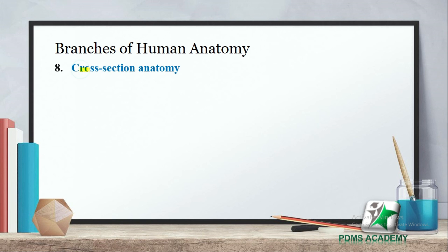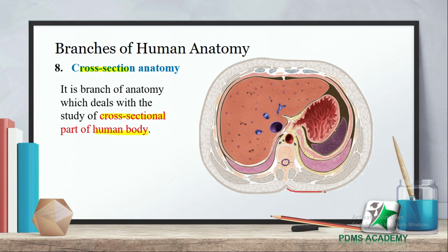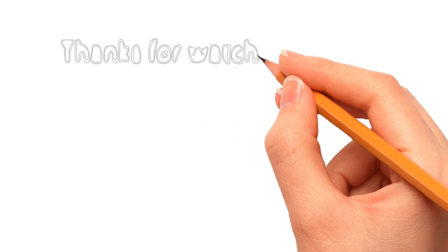The next branch is cross-sectional anatomy. It is a branch of anatomy that deals with the study of cross-sectional parts of the human body. For example, if we take a cross-section of the body, we can see structures from different angles — horizontally or vertically. In a cross-section, we can observe the liver, stomach, spleen, aorta, vertebral column, and spinal cord. Studying these cross-sections is called cross-sectional anatomy. Hope you understand this lecture.